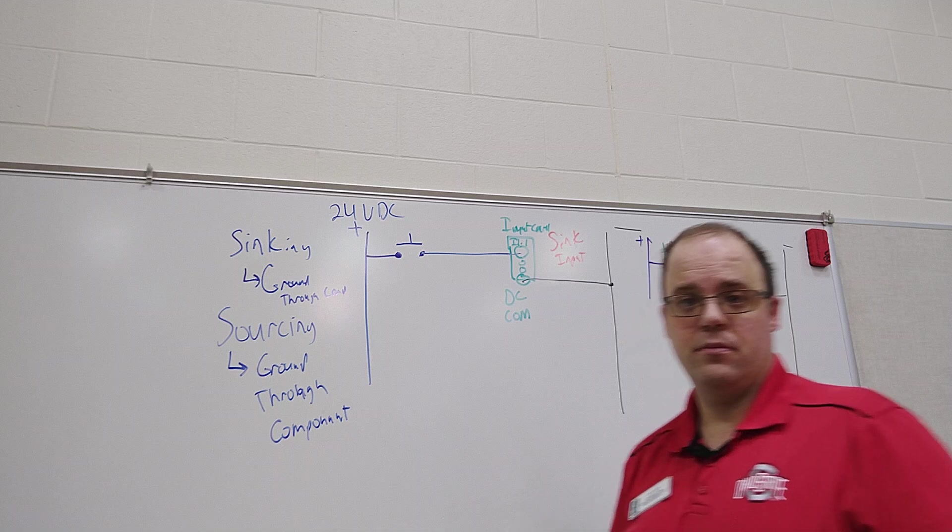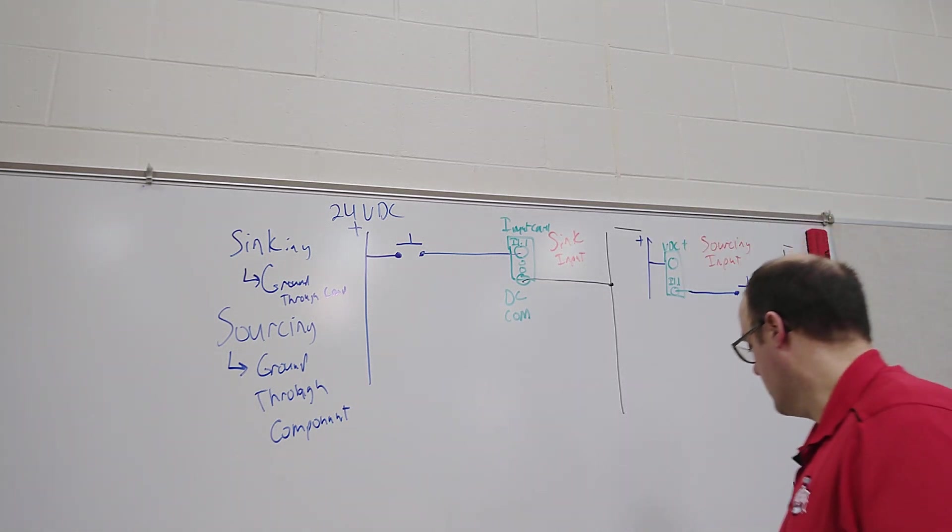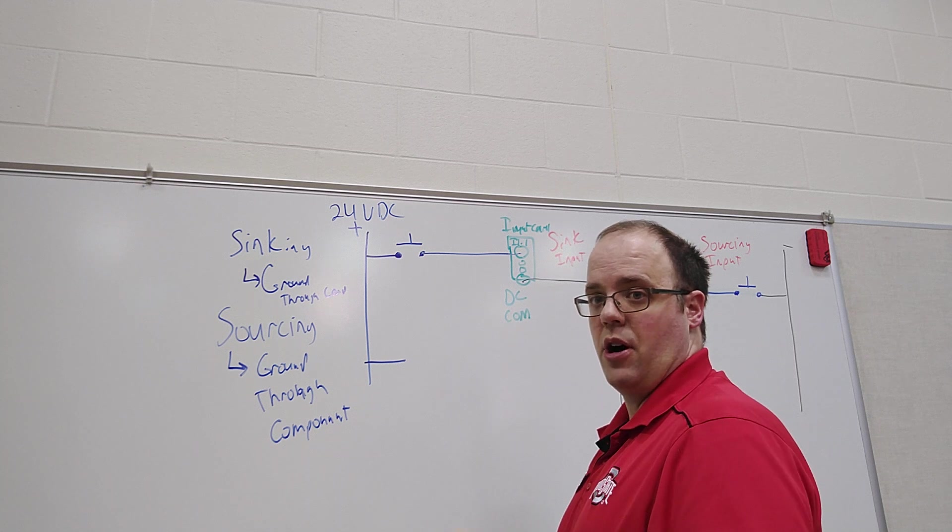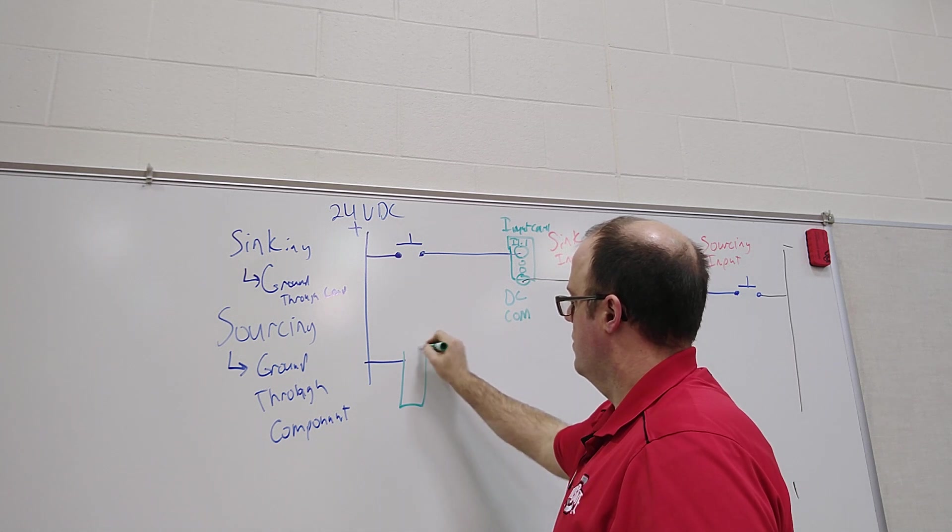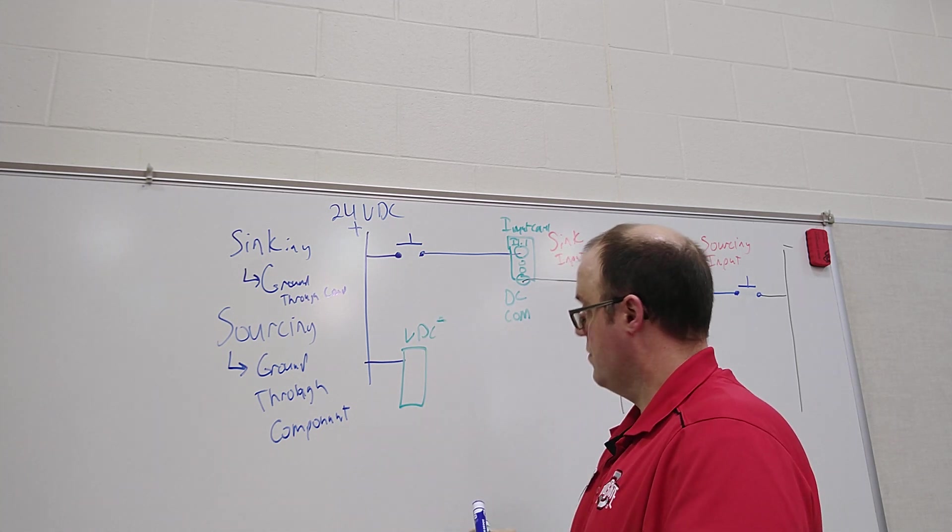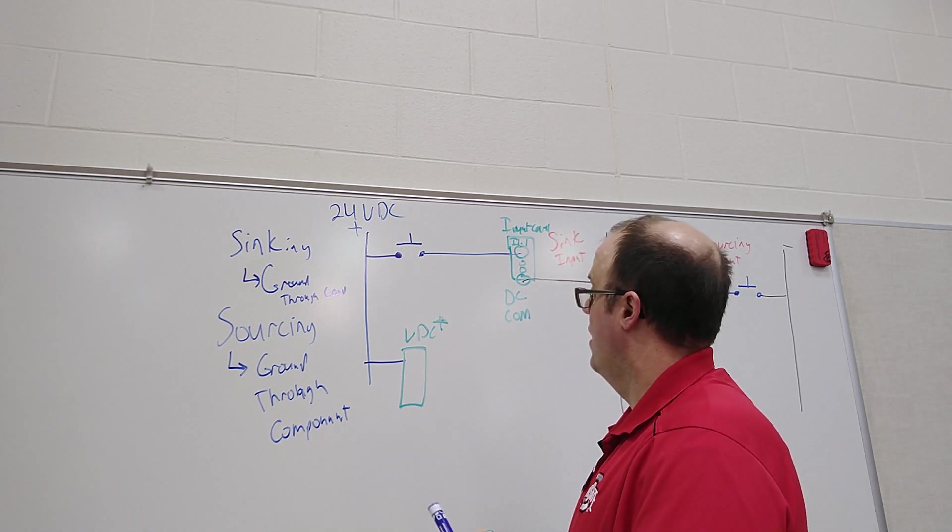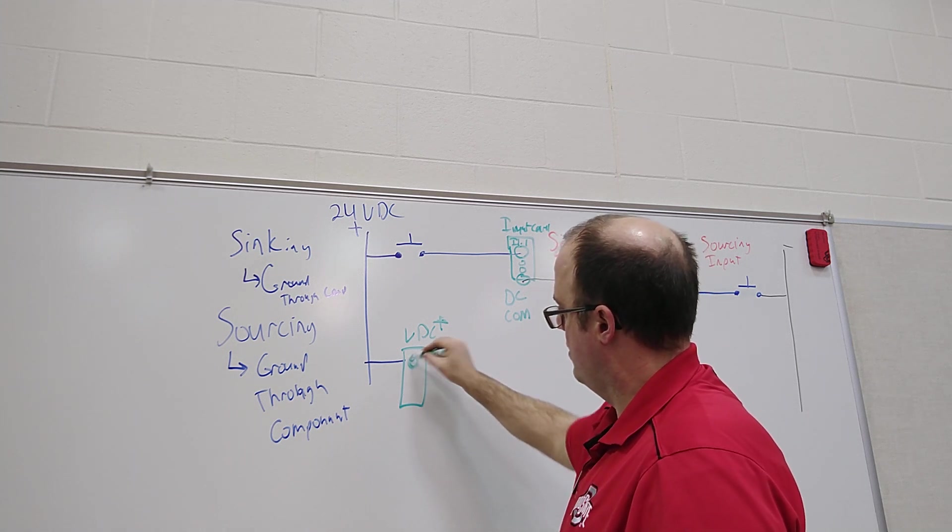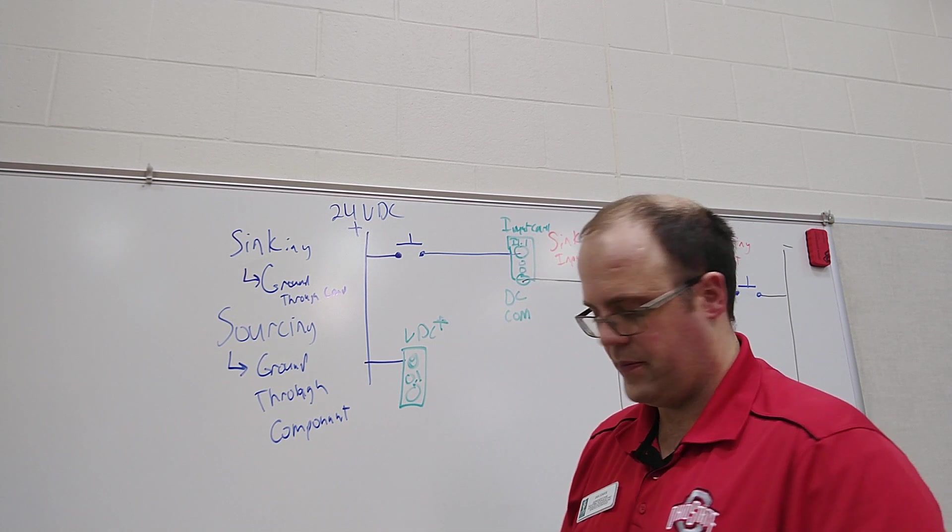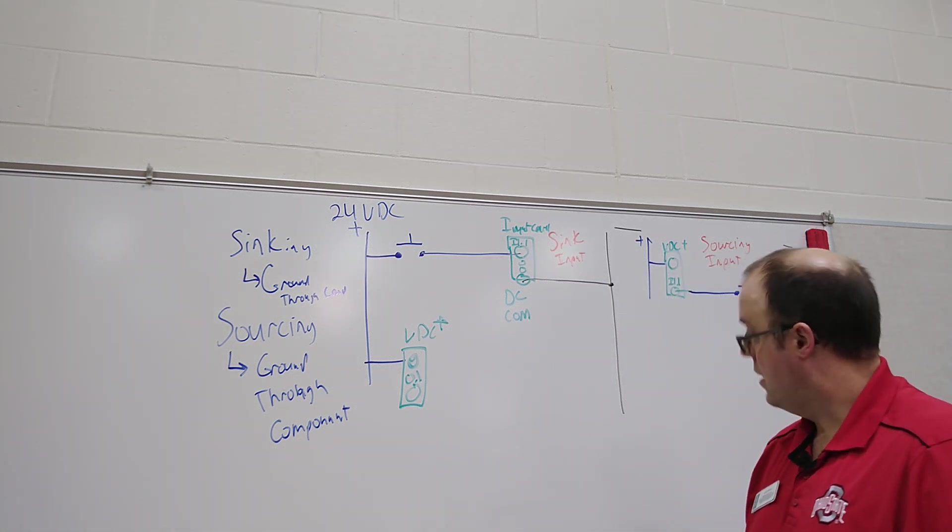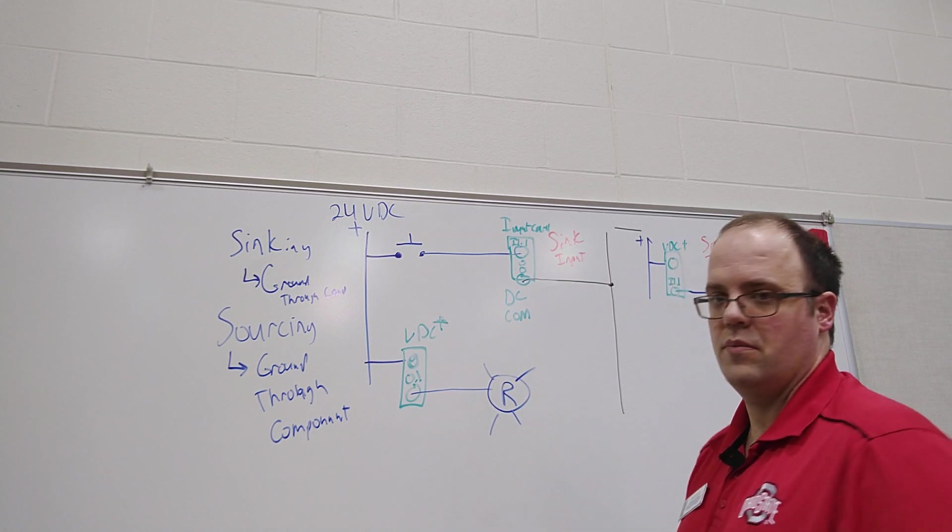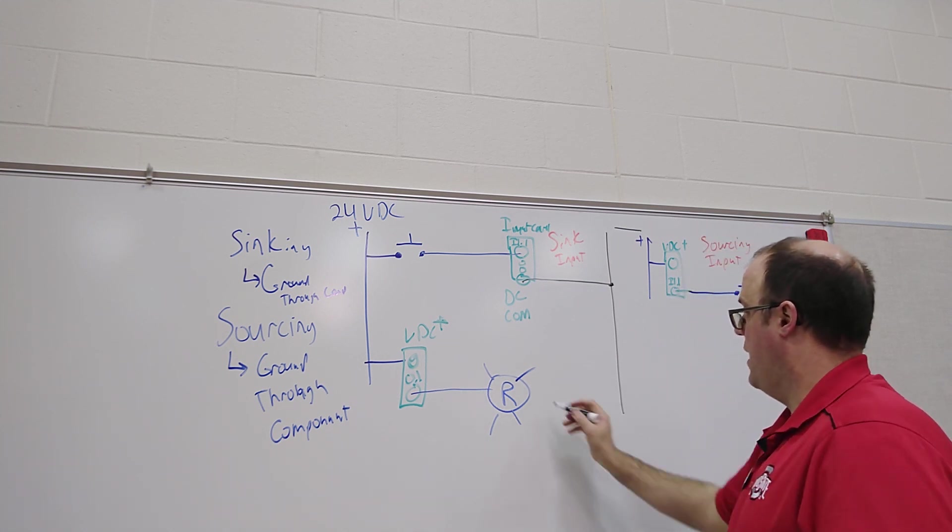Well I can also do outputs as well. Once again I supply 24 volts to an output card, VDC common for instance, a VDC plus to that terminal screw, and then down here something that says like out one. I will then feed that to let's just say a light, a red light. And then that grounds off.